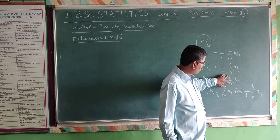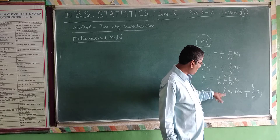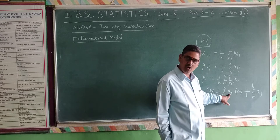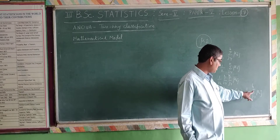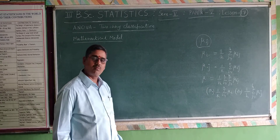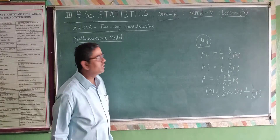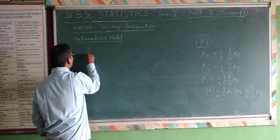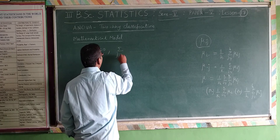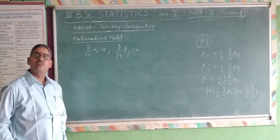Now I prove two particular results: summation i equals 1 to k of alpha i equals 0, and summation j equals 1 to h of beta j equals 0. These correspond to the null hypothesis where all treatment effects are the same — meaning they are nullified — so summation alpha i equals 0.